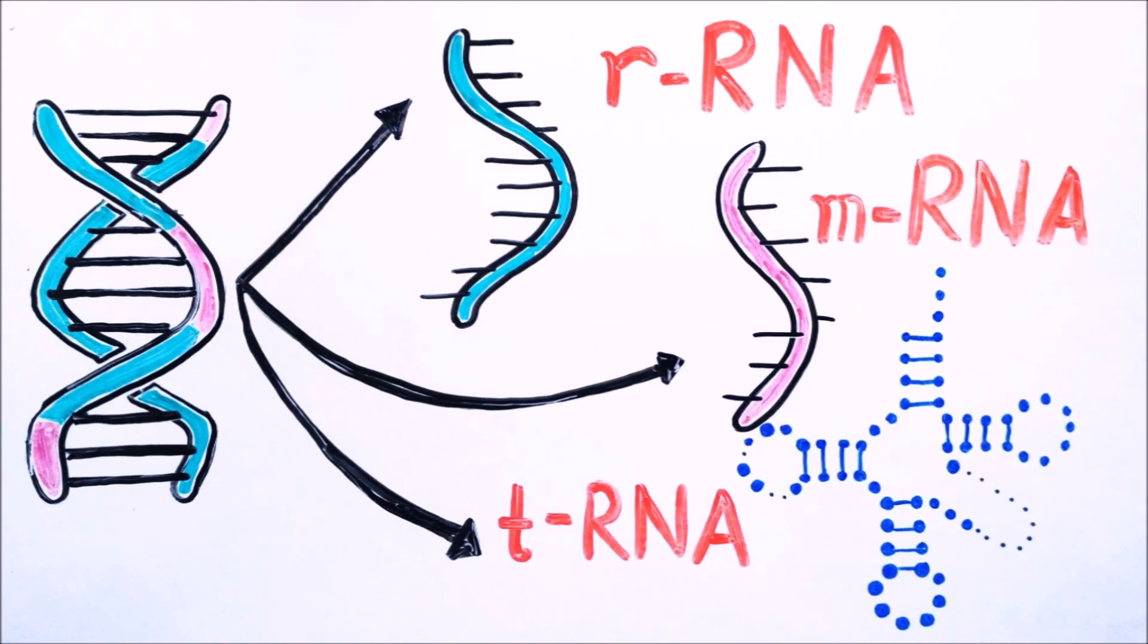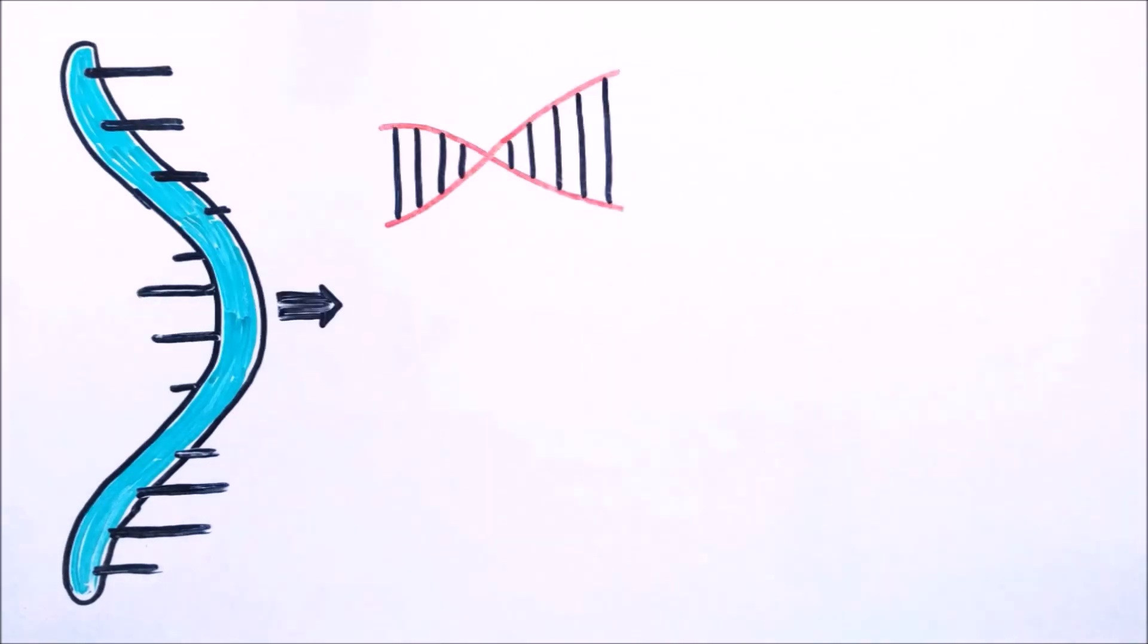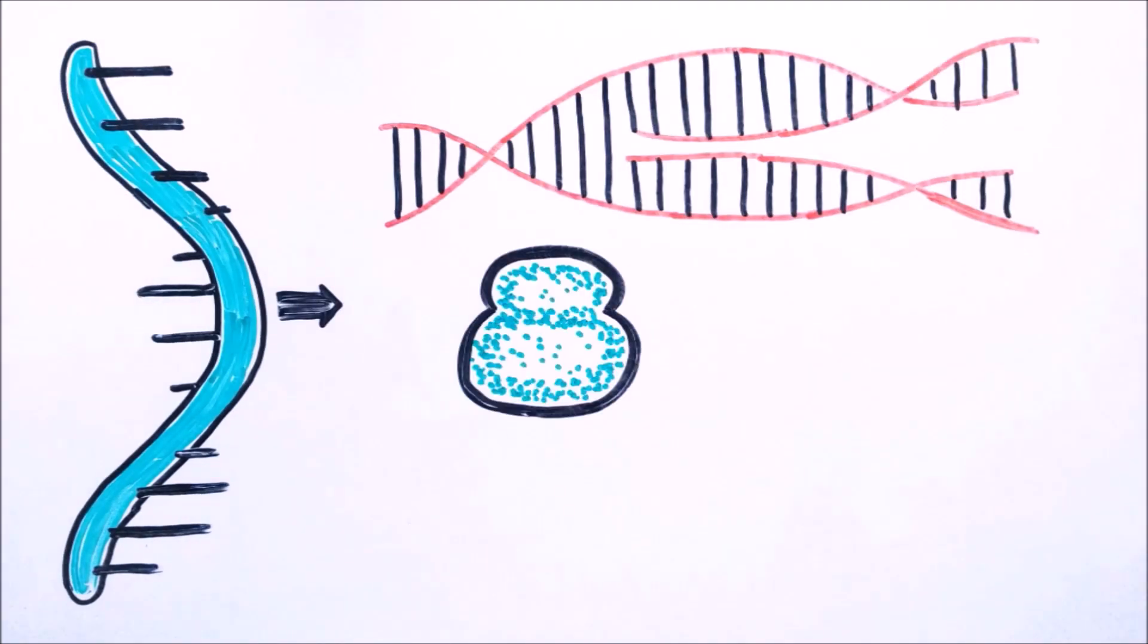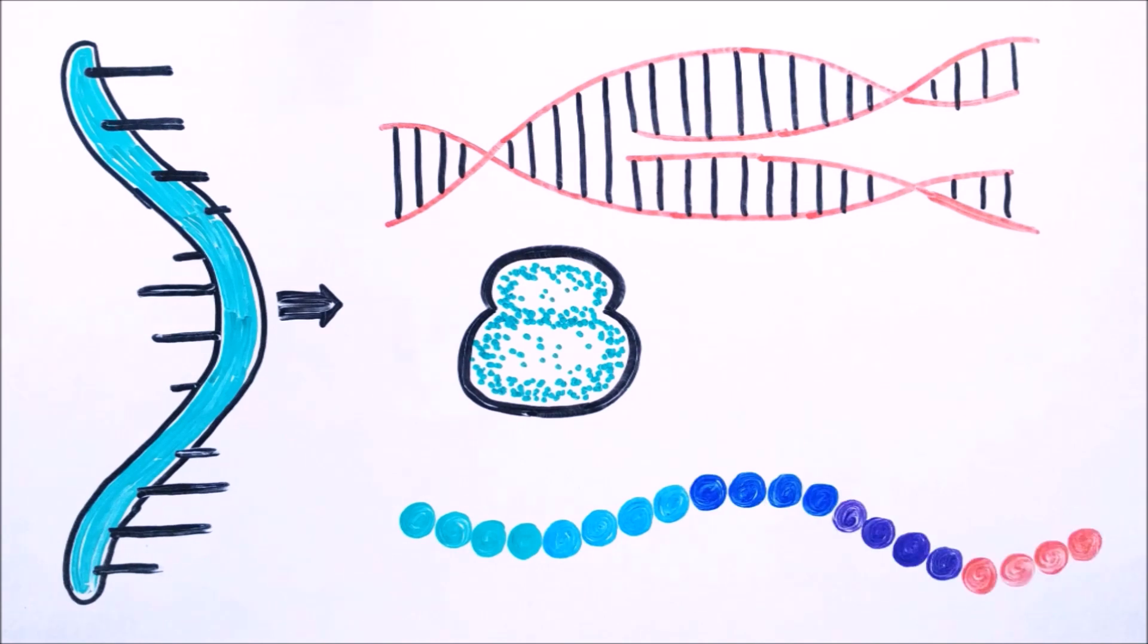Some of junk DNA is used to produce non-coding RNA components. These components perform the function of DNA replication, producing ribosomes, and also help in formation of protein.